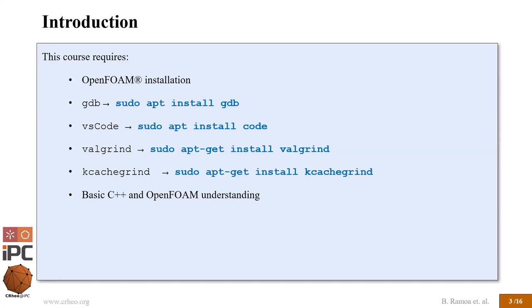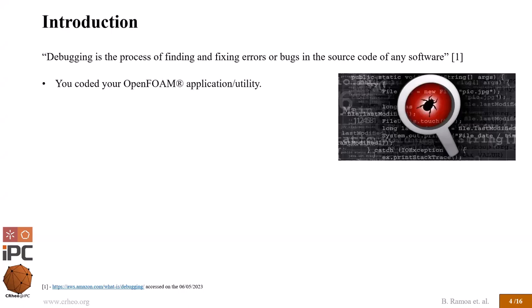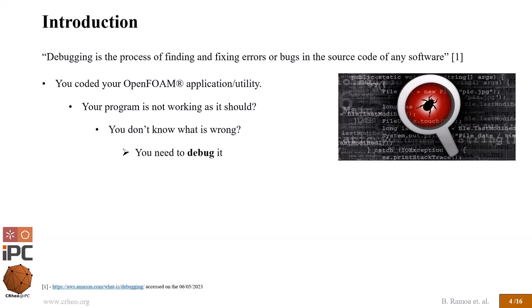Debugging is the process of finding existing errors in the source code. You have code in OpenFOAM or your application that has some sort of error, something is not working, and you don't know what is wrong. Debugging tools help you understand how the code is structured, and you can also use them for learning more about programming.